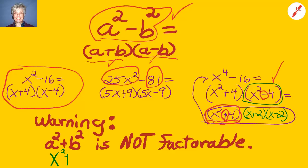Look at x squared plus 16. x squared plus 16 is not factorable. It cannot be factored. Even though x squared minus 16 can be factored, x squared plus 16 cannot be factored. So, this is factoring by the difference of two squares.